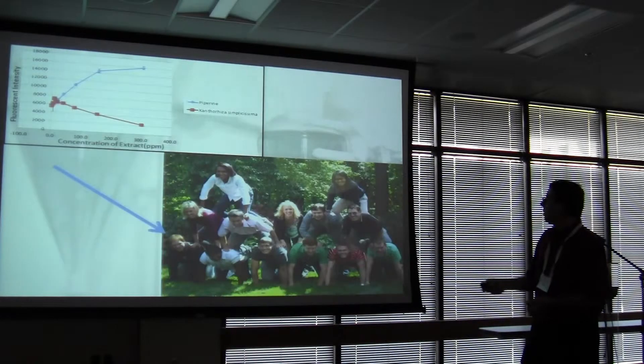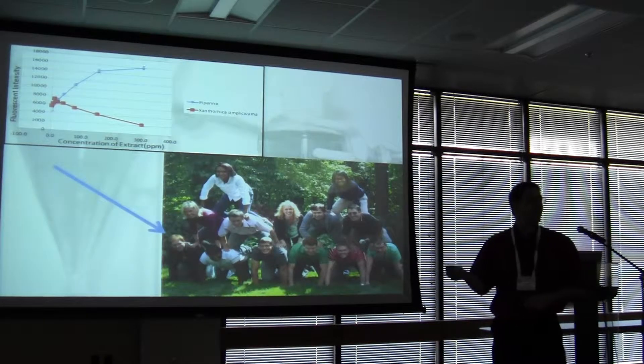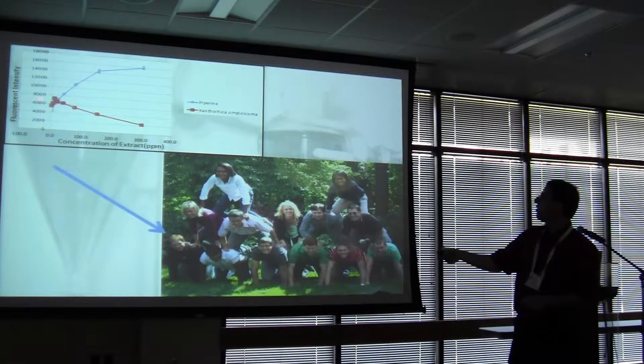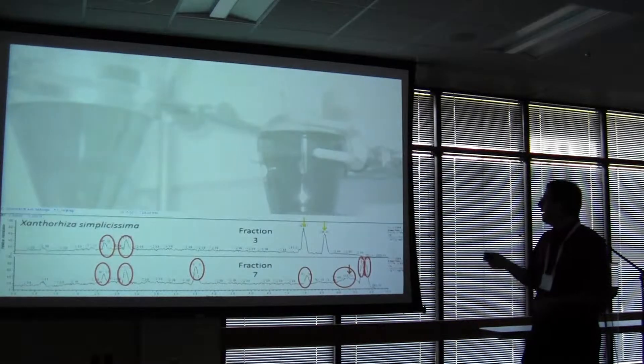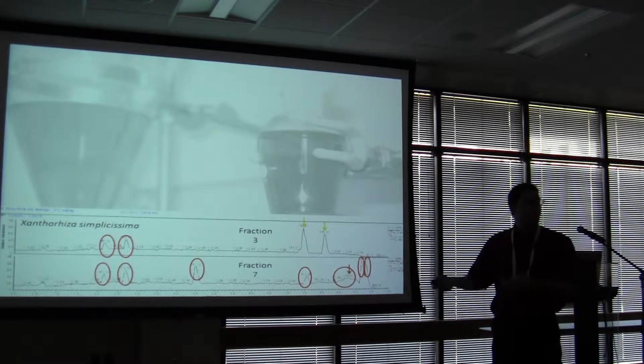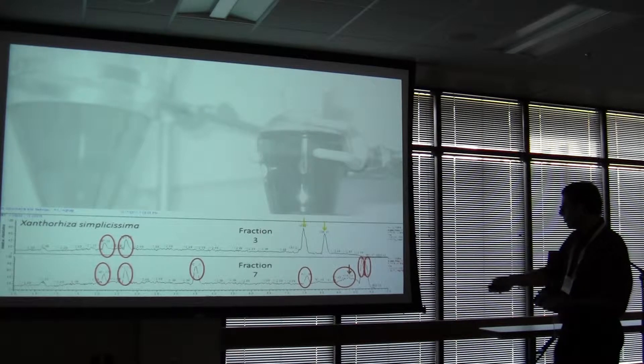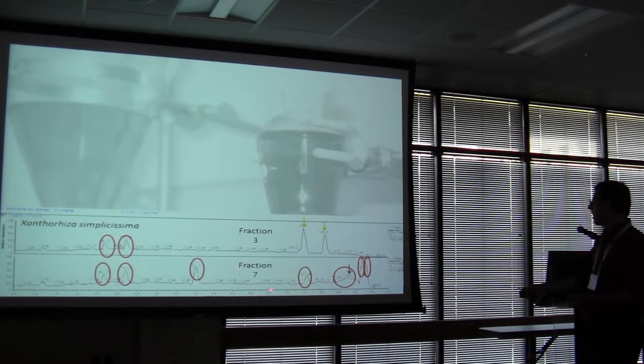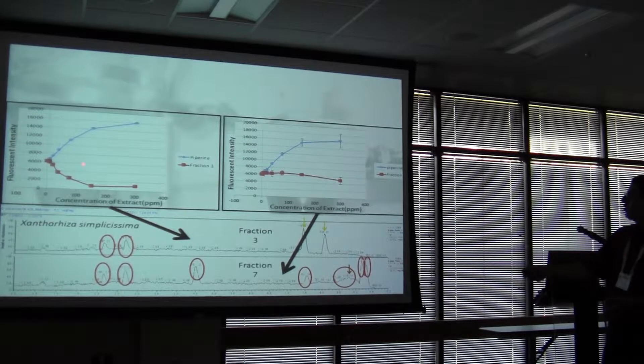So some of this data was done in collaboration with one of the undergrads, Pat, here in our lab, who wanted to work on some bioactivity-directed fractionation, working with Xanthoriza extract, which was another one of these ambiguous ones at first. He did a fractionation with flash chromatography. And this is the exclusion criteria applied to one of the early fractions and one of the late fractions. The late fraction having no possible flavonoids, the earlier fraction having two.